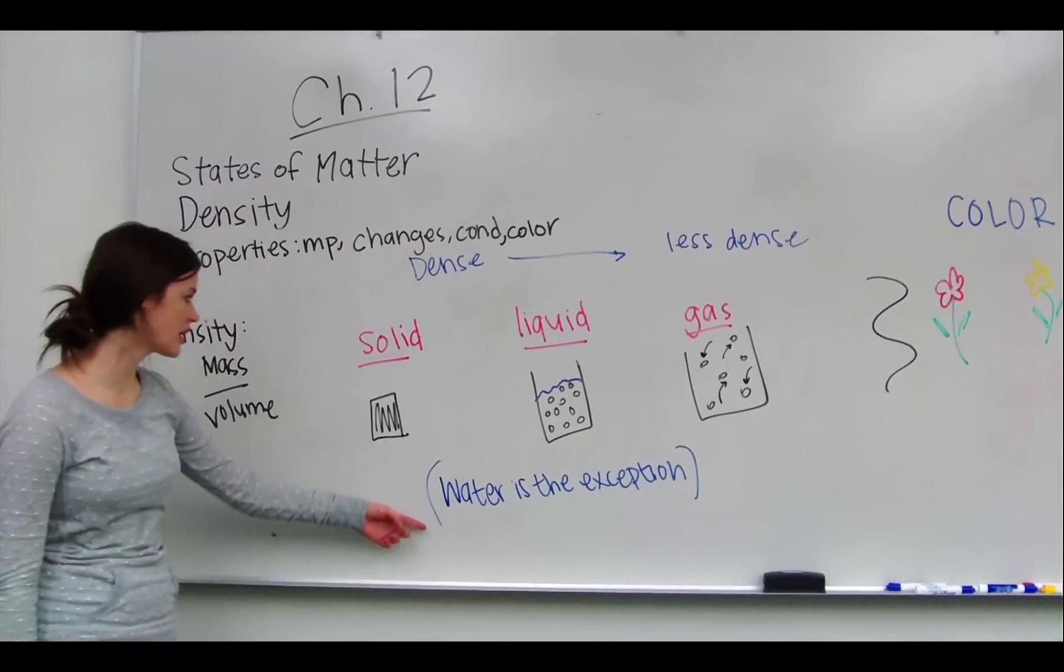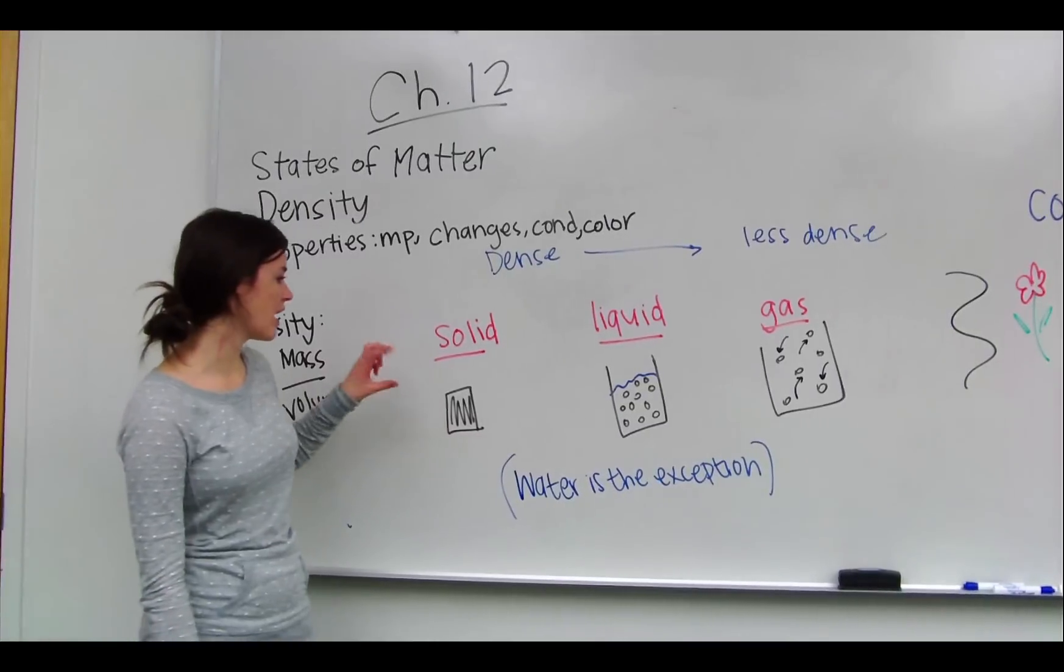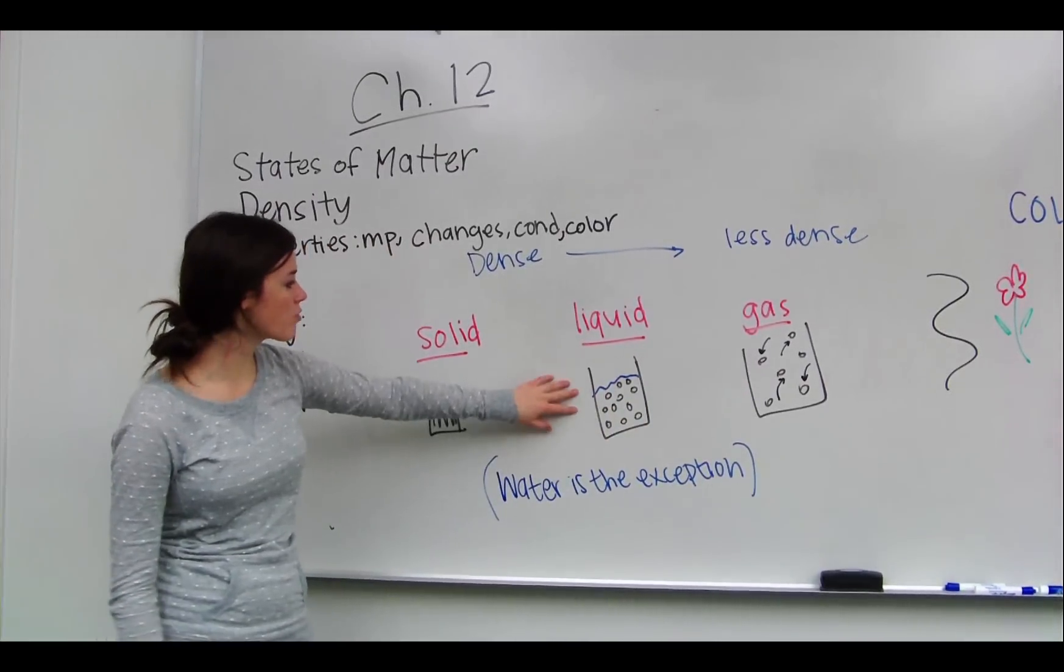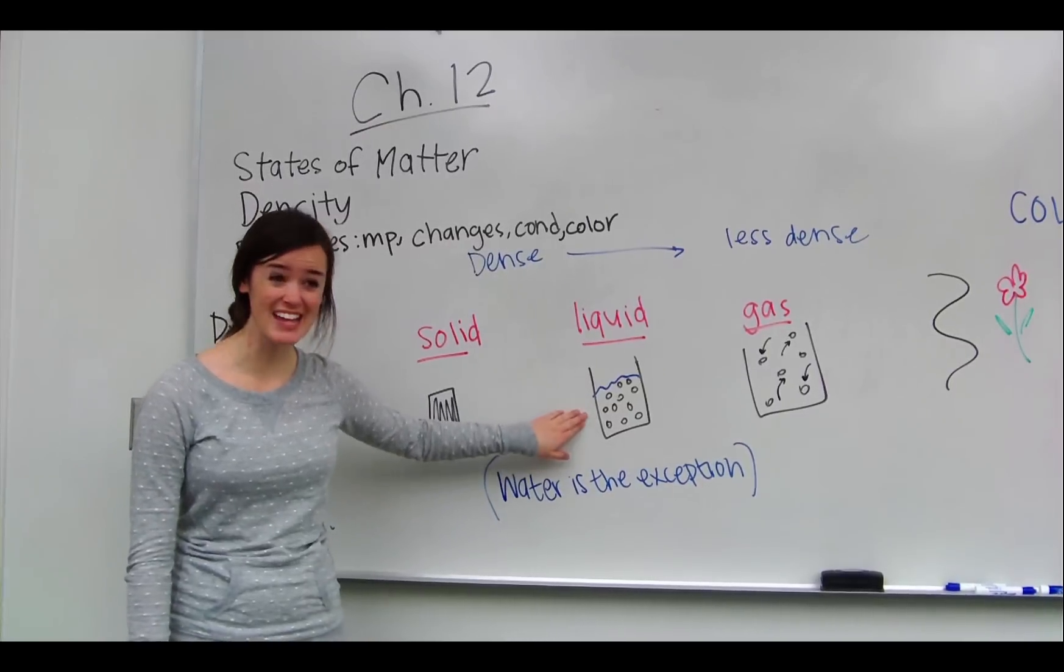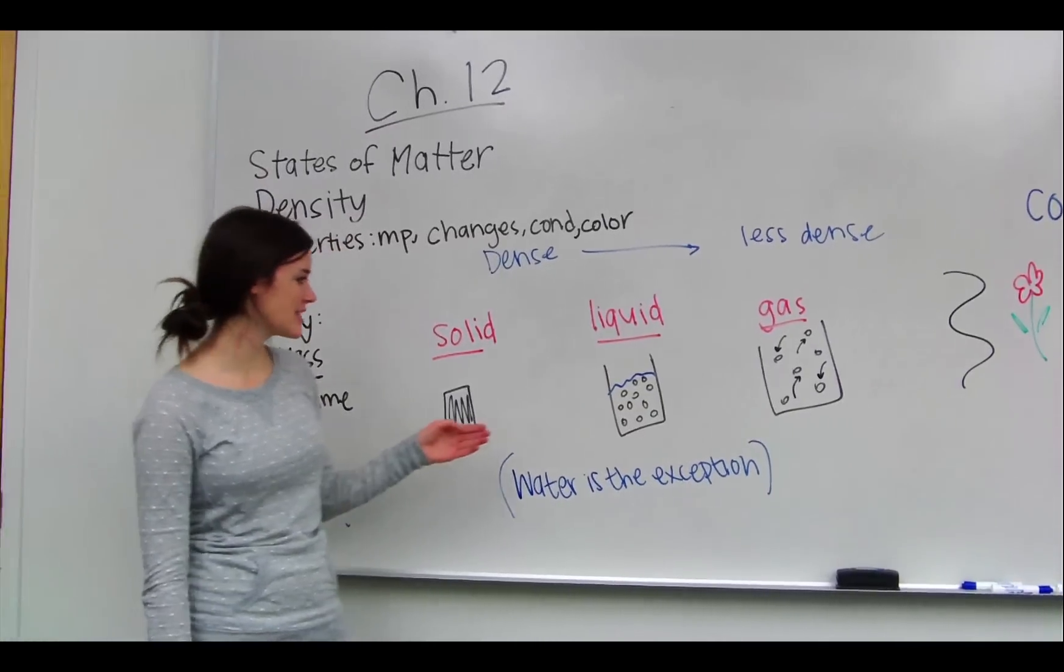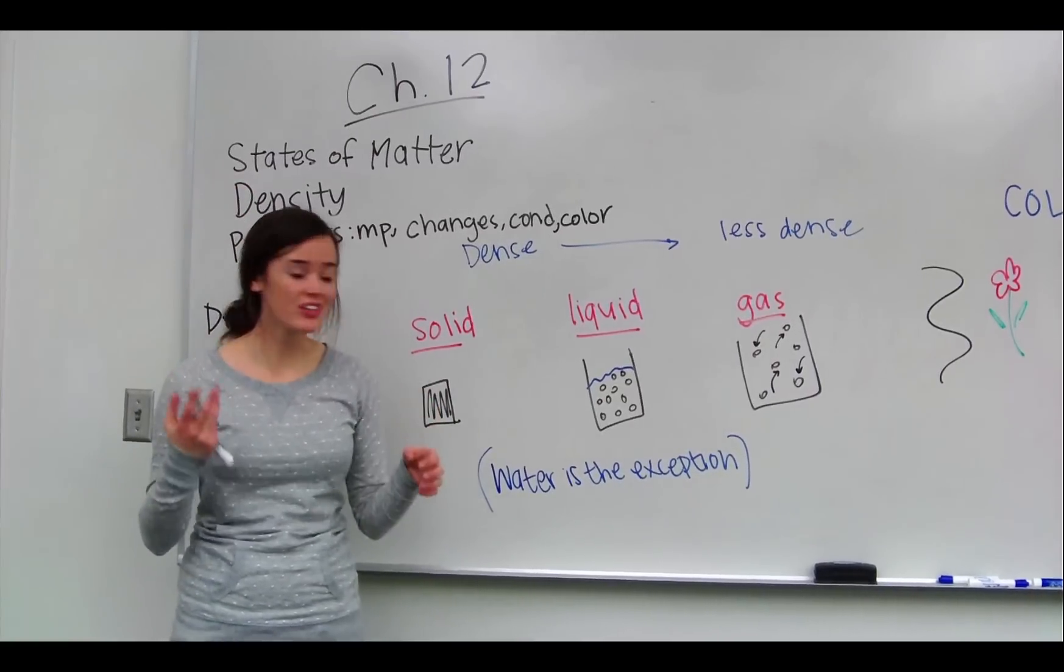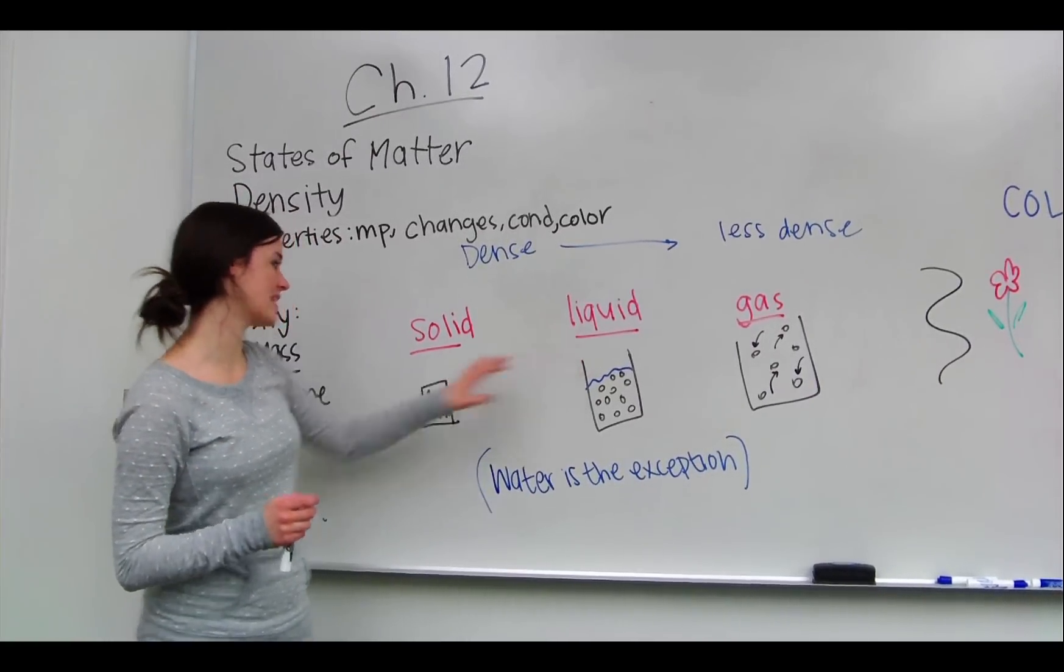Water is the exception here. If we had ice, drinking water, and water vapor, the drinking water is actually more dense than the ice. That's why it's the exception—it allows ice to float. But generally, liquids are less dense than solids.